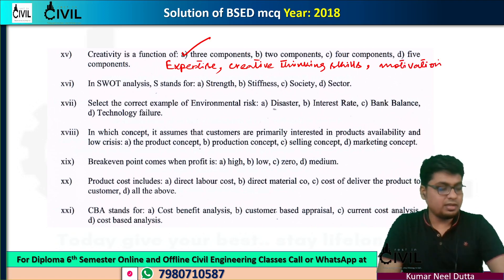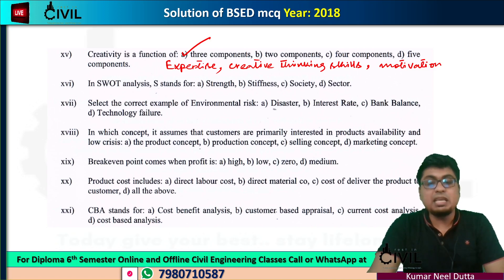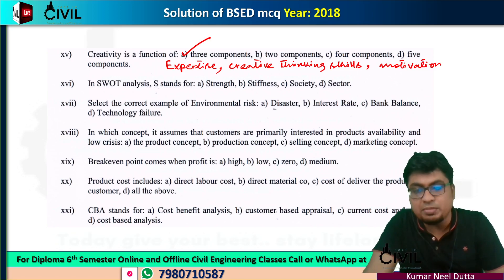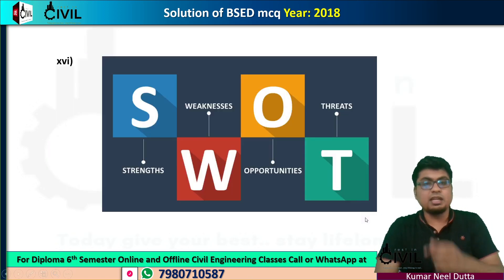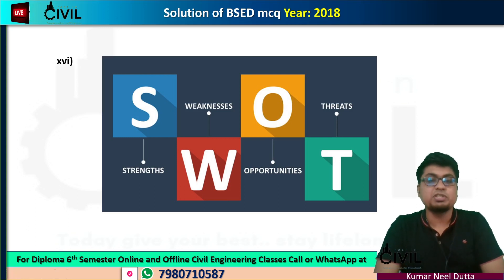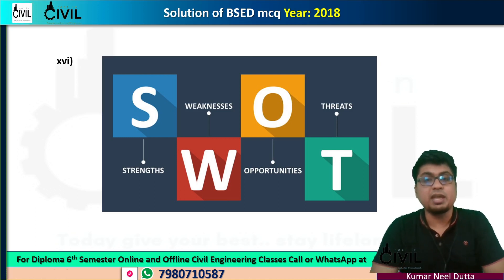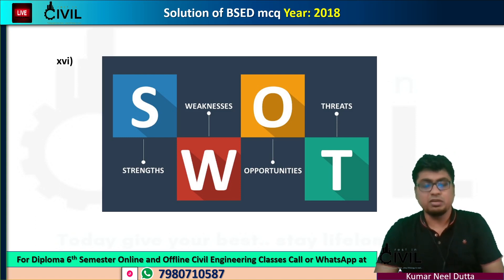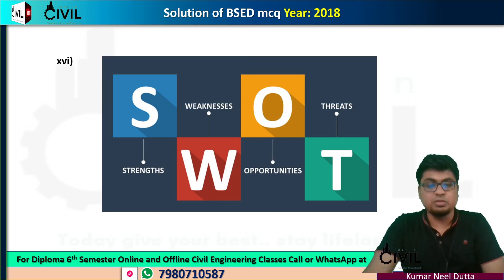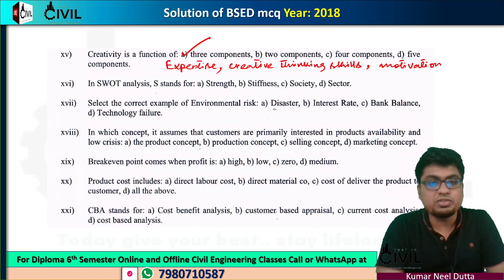Number 16 is a SWOT analysis. SWOT stands for: S for strengths, W for weakness, O for opportunity, and T for threats. This is what a SWOT analysis means.